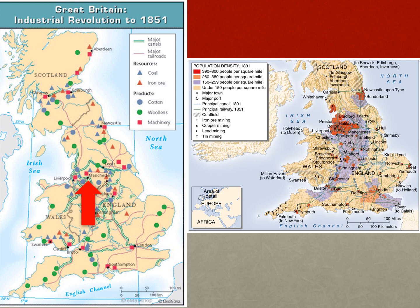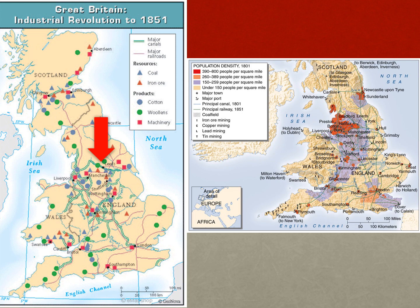As time progressed in Britain, areas around coal fields became more densely populated and then highly urbanized. The coal, cotton, and textile plants located close to each other helped Liverpool, Manchester, and Leeds become the center of mechanized textile manufacturing during the Industrial Revolution.